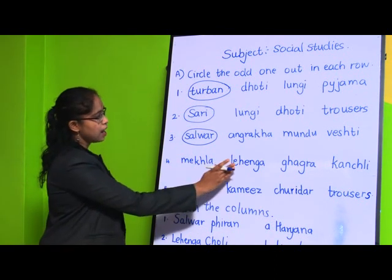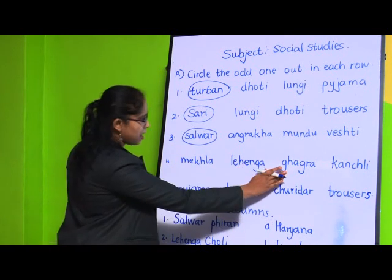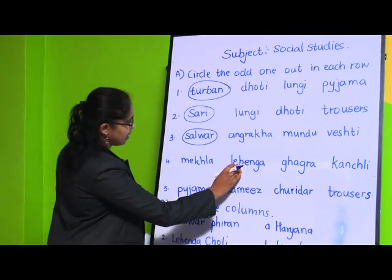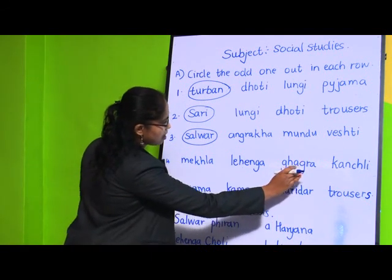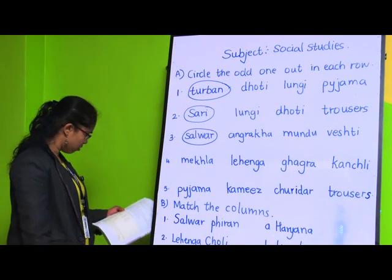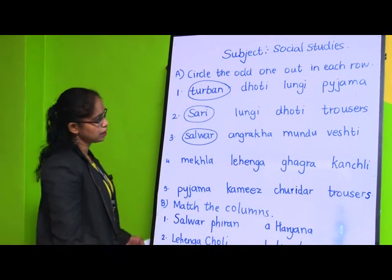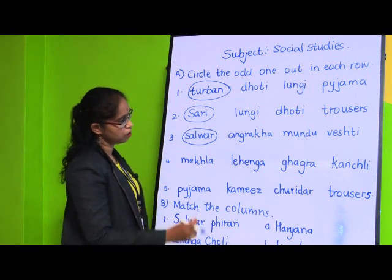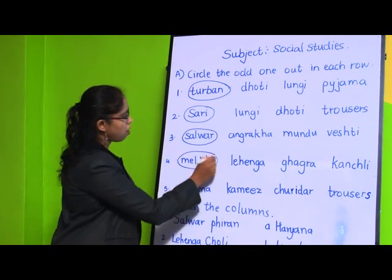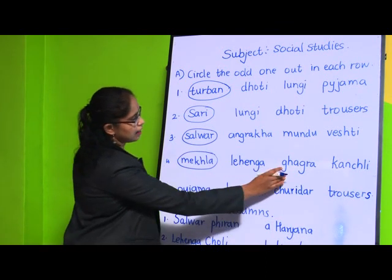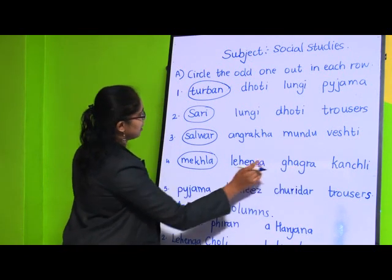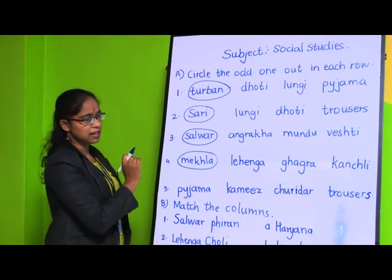Fourth question: Mekhla, lehenga, ghagra, kanchali. Mekhla will be the odd one. Lehenga, ghagra, and kanchali - they are worn together as one dress. So mekhla is the odd one out.